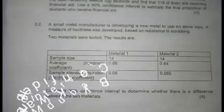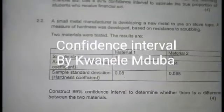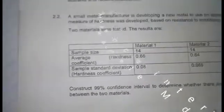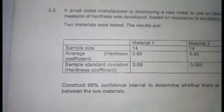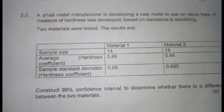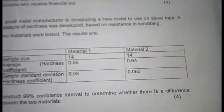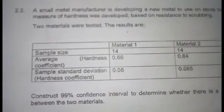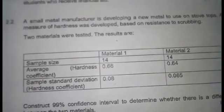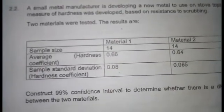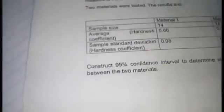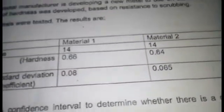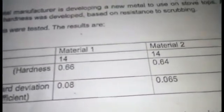Hey, it's me again. Today I'll be discussing confidence intervals. Let's look at problem 2.2: a small metal manufacturer is developing a new metal to use on stovetops. A measure of hardness was developed based on resistance to scrubbing. Two materials were tested.